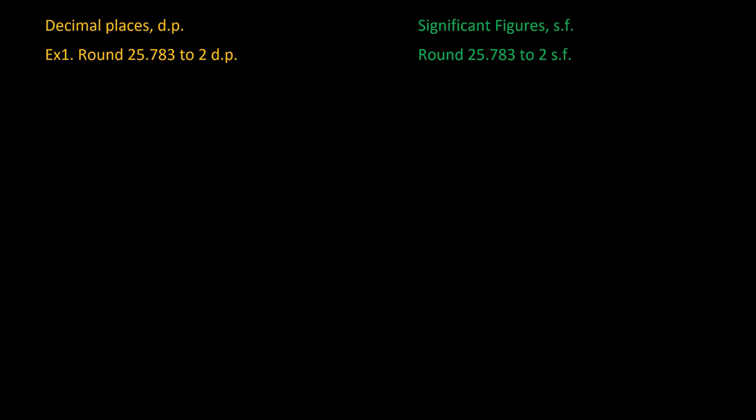Now we're going to get into the actual rounding process itself. There are two main ways that you will be asked to round. The first is rounding to decimal places, abbreviated to D.P. I'm going to go through this example and then we'll talk about the second type on the right hand side.